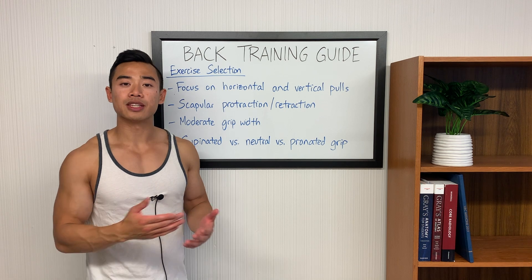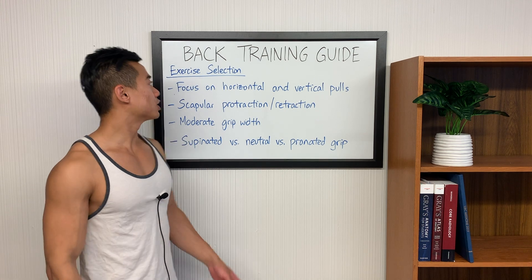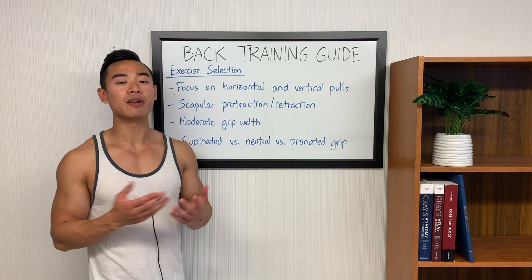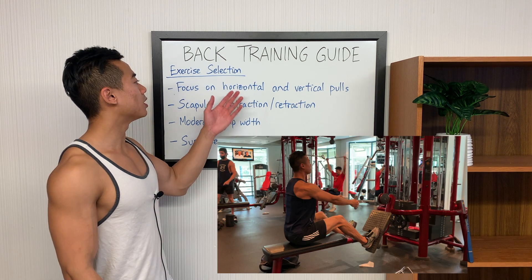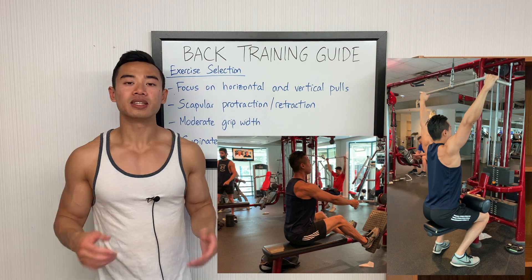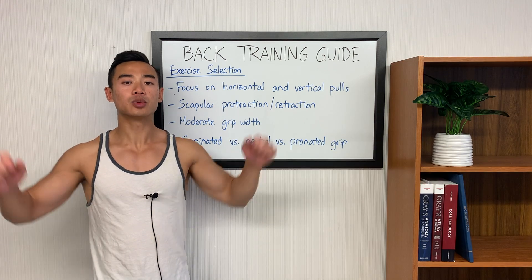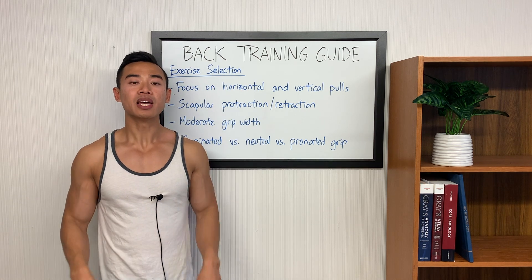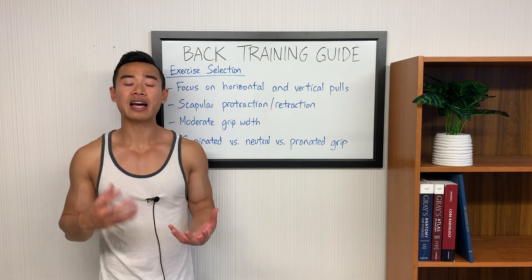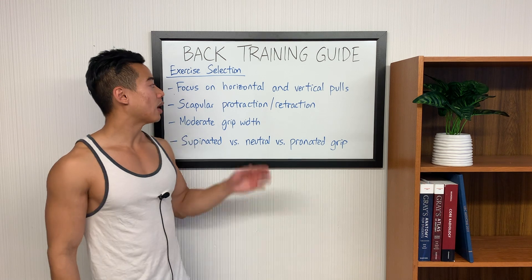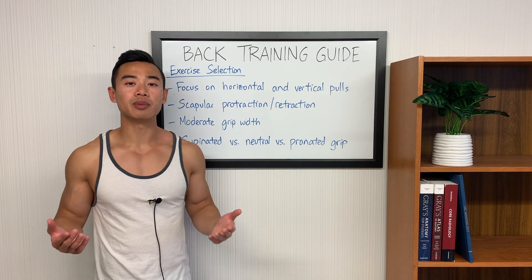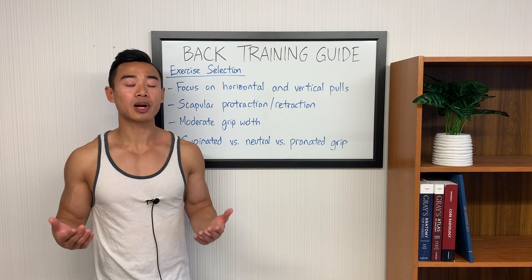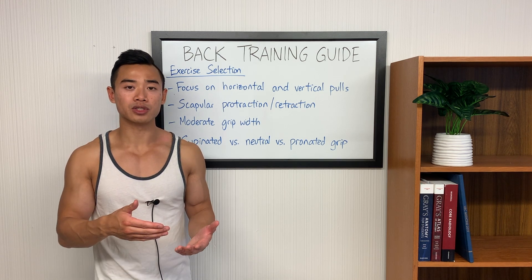Now that we understand the training anatomy, let's apply that knowledge to talk about exercise selection for the back. The main focus is that you want to emphasize compound horizontal and vertical pulling movements, which will effectively get your shoulder extension as well as your shoulder adduction. In terms of how much of each to put into your program, I typically recommend going about half-half horizontal and vertical pulling. However, the horizontal pulls also get you a bit more in terms of rhomboid, trap, and rear delt activation, so if you're going to prioritize one, I would probably go with the horizontal pulls.